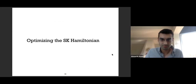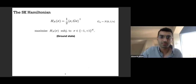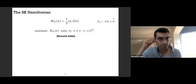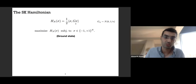The second part of the talk is about optimization. The notation changes slightly: instead of M I write G, with M = beta * G, so G has variance 1/n instead of beta^2/n. Instead of sampling from the Boltzmann measure, I consider the problem at zero temperature where beta goes to infinity, so the measure concentrates on global maxima, and I ask to find one of those global maxima—to optimize the Hamiltonian H subject to sigma in the hypercube.